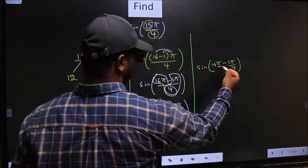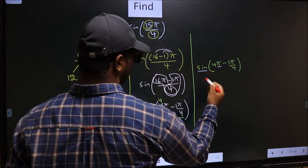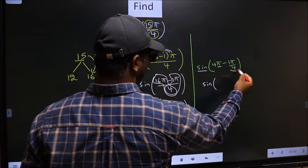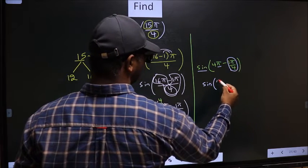Next, here we have π. So sine is not going to change. It will remain sine. And inside we get this angle, π by 4.